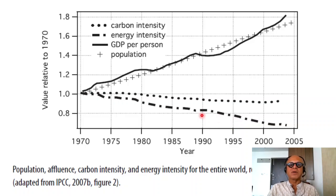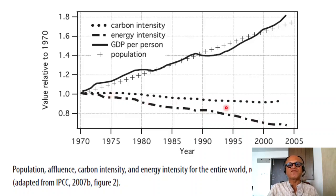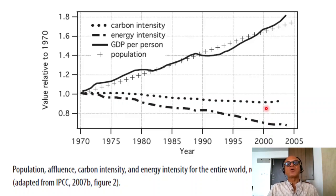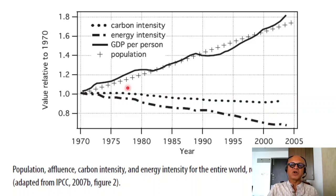This doesn't necessarily mean total emissions go down, because GDP goes up. So even if energy intensity of GDP drops, total emissions can still rise. Carbon intensity of energy production is going down, which is good news as renewables play in, but you still need to be careful — shifting from coal to natural gas is not enough. Decarbonization is still the best way.